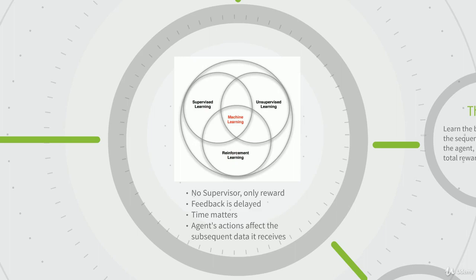Some examples of reinforcement learning would be defeating the world champion at backgammon or chess, making an investment portfolio, controlling a power station, making a robot walk, or playing an Atari game. These are very cool applications and are what come up in articles more often than other machine learning techniques. It's also one of the newer machine learning approaches. In Unit 4, when we talk about neural networks and deep learning, we'll continue discussing reinforcement learning because it is used in conjunction with deep learning networks a lot of the time.